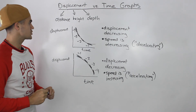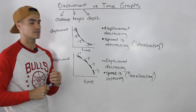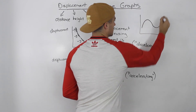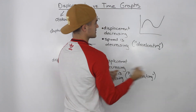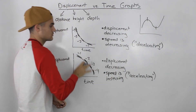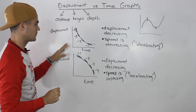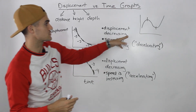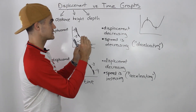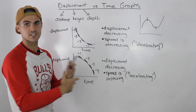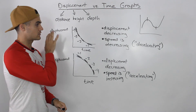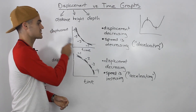Those are pretty much most of the cases you will run into with displacement versus time graphs. A lot of times they'll give you displacement versus time graphs with multiple phases. You may have to split them up and relate them back to these base graphs — each phase you would relate to the graphs we went over. You could always take any displacement versus time graph, even a complex one, split it into phases, see which base graph each phase relates to, and describe that phase. These are pretty much the base cases for displacement versus time.